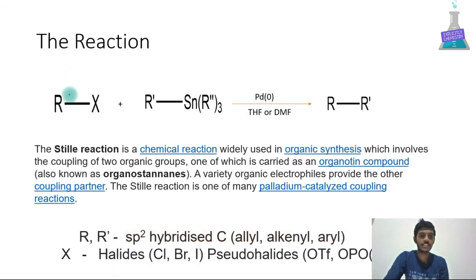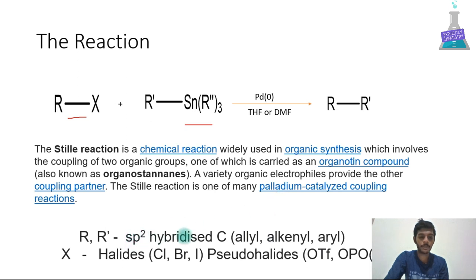In the Stille reaction, an alkyl halide is treated with a tin compound in the presence of a palladium(0) catalyst to form the coupled product. It involves two organic groups: an organotin compound and a coupling partner with an sp2 hybridized carbon, which may be allyl, alkyl, or aryl. The X group may be halides or pseudo-halides like OTf. In the presence of palladium, the coupling happens — this is called the Stille coupling reaction.